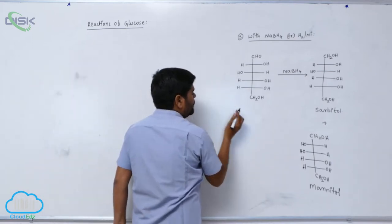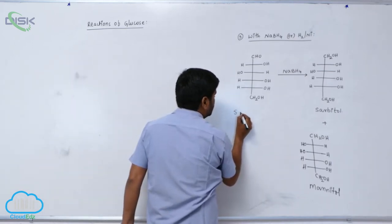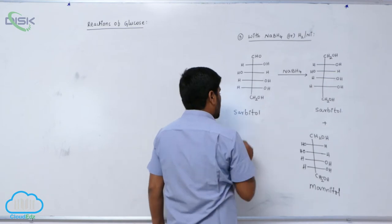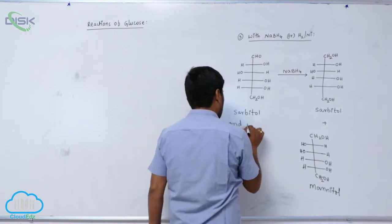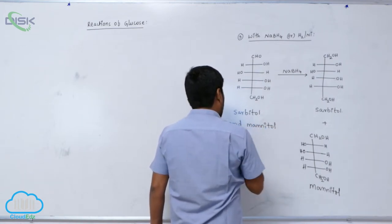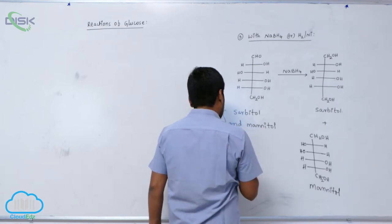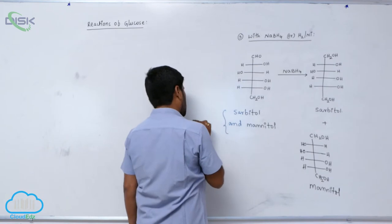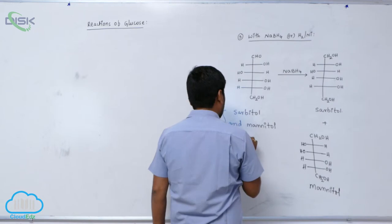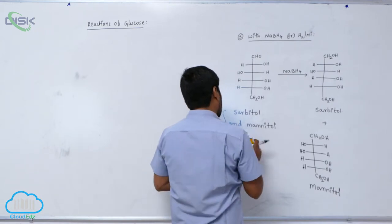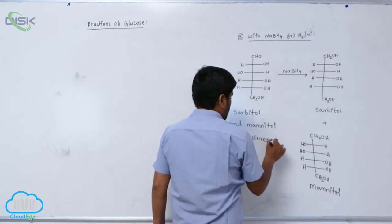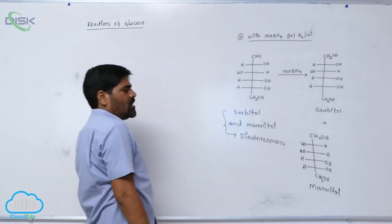Sorbitol and mannitol are both diastereomers.